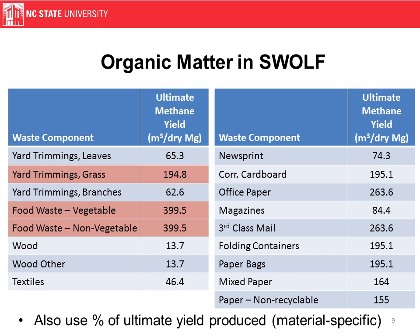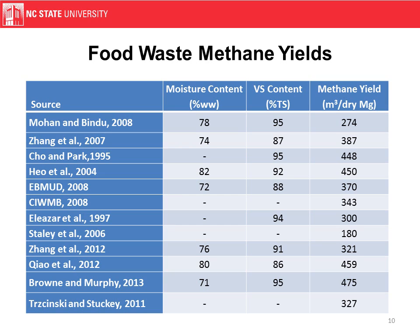The numbers shown are ultimate methane yields — our default numbers. Methane yields indicate how much methane you could get out of a material if all of it is fully degraded. There's also a relationship with how much of that is actually degraded, which we'll talk about in a little while. There's a big range from about 180 to close to 500 in what methane yields could be, so it's important to get as good an idea as you can of the feedstock that you have.